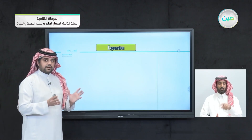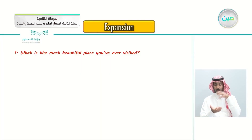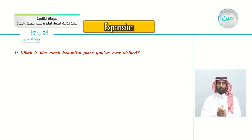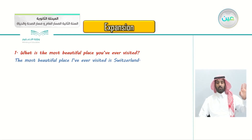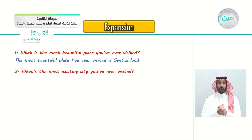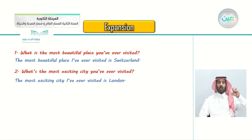Number one: what is the most beautiful place you've ever visited? Answer using the present perfect: the most beautiful place I've ever visited is Switzerland. Number two: what's the most exciting city you've ever visited? The most exciting city I've ever visited is London — 'the most exciting' is the superlative, 'I've ever visited' is the present perfect.